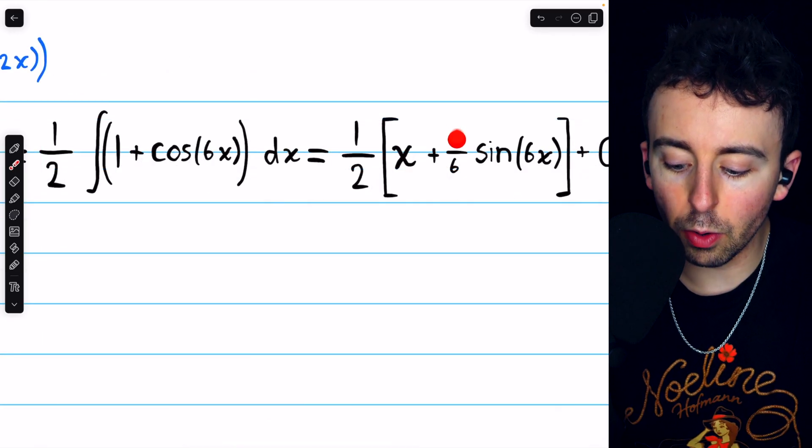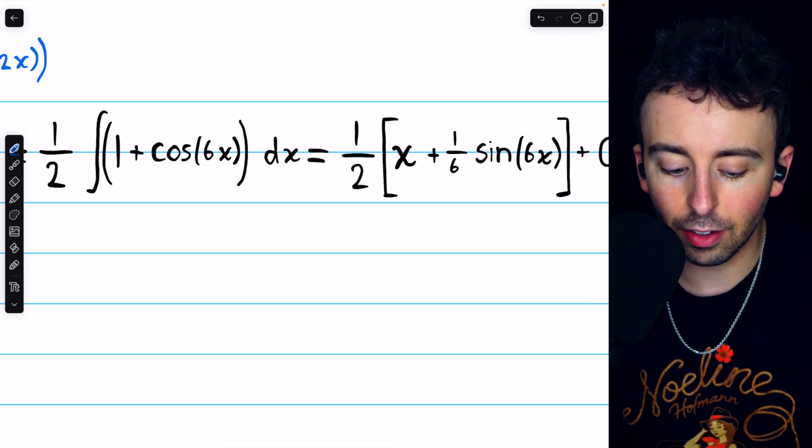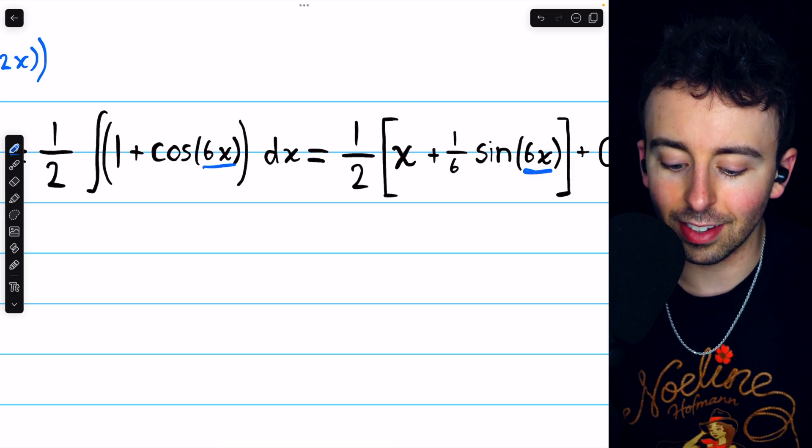In particular, it will be 1 over 6 times sine of 6x. Of course, we need sine of 6x because the derivative of sine gives us that cosine, and we need that 6x inside.